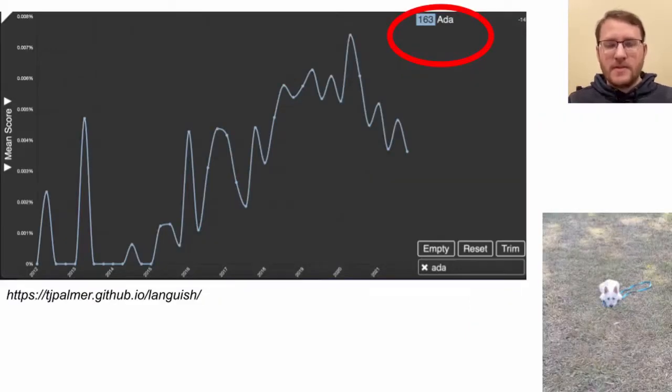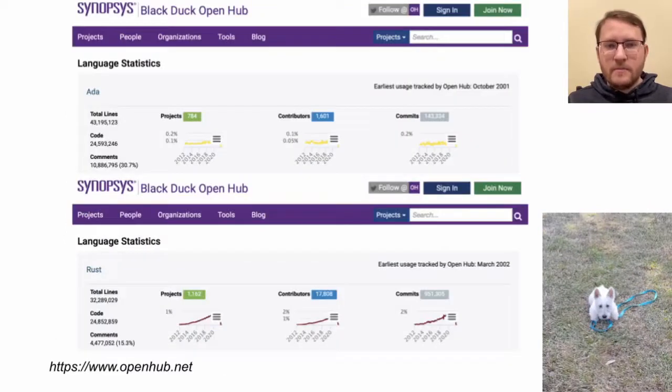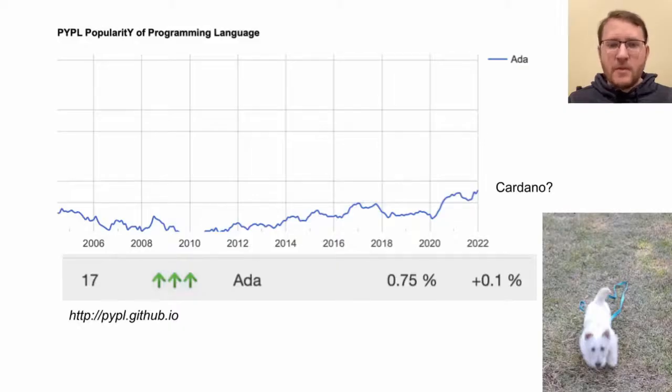There isn't a considerable open-source presence for ADA. The TIOBE ranking has it at number 34. Languish, which looks at the number of GitHub issues, pull requests, and stars, has it at number 163. ADA doesn't show up on the RedMonk programming language rankings, and it does not appear on the Stack Overflow developer survey. Black Duck OpenHub shows Rust as having 10 times the number of contributors of ADA and about the same amount of code. The popularity of programming languages metric shows ADA steadily gaining, though there's some question of if this is generated by ADA the language or by Cardano the cryptocurrency, which calls its token ADA.